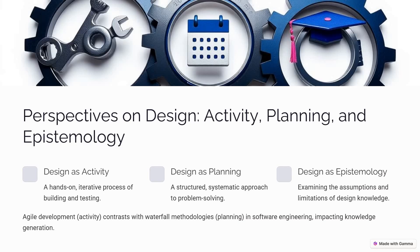There are three perspectives on engineering design. First is design as activity — a hands-on, iterative approach involving building and testing. For example, agile software development where code is frequently updated based on feedback. Next is design as planning — a structured, step-by-step process for problem solving. For example, the waterfall model in software engineering, which follows a predefined sequence. And then design as epistemology — understanding the assumptions, limitations, and reliability of design knowledge. For example, evaluating the safety of autonomous vehicles before deployment. Each perspective plays a vital role in engineering innovation.